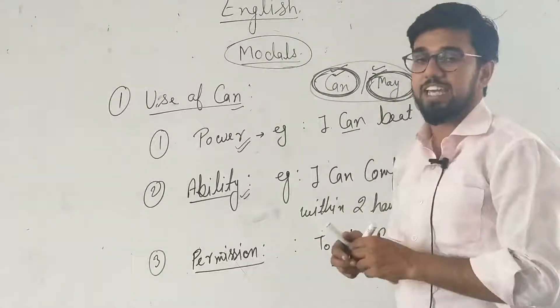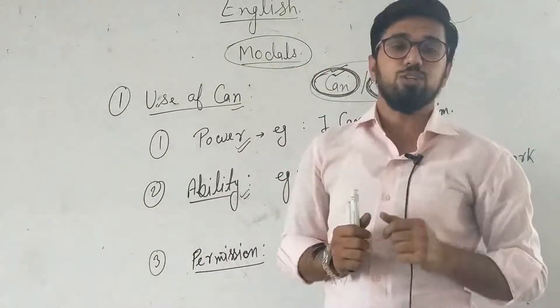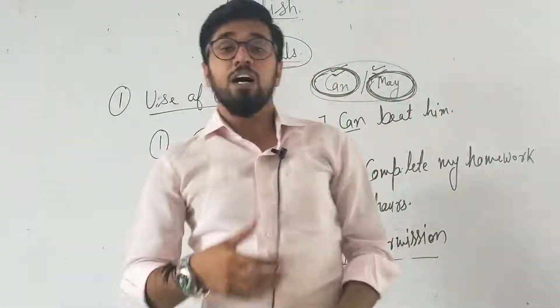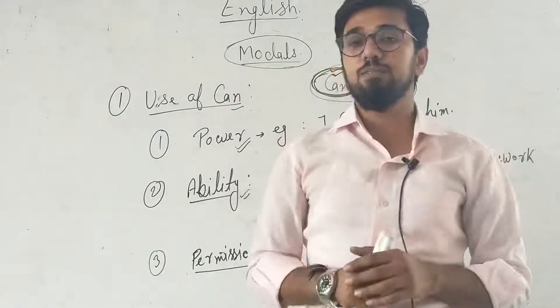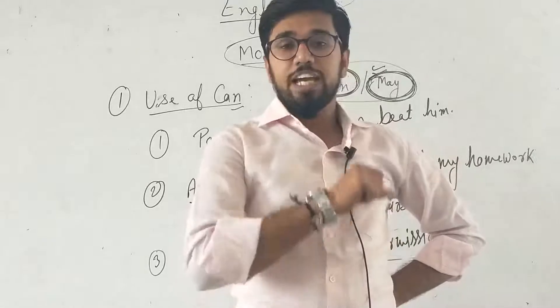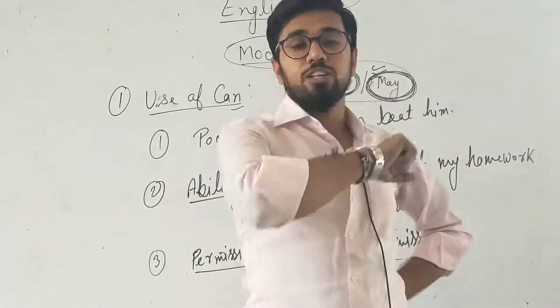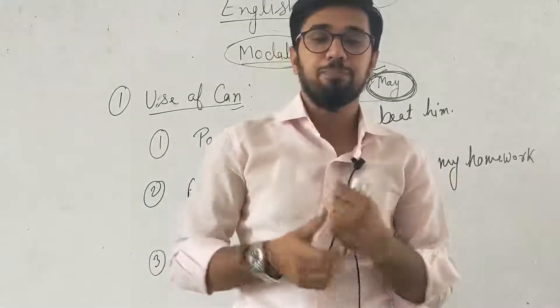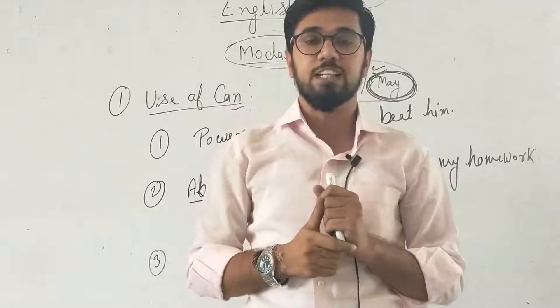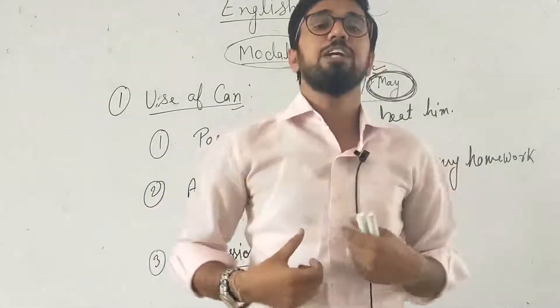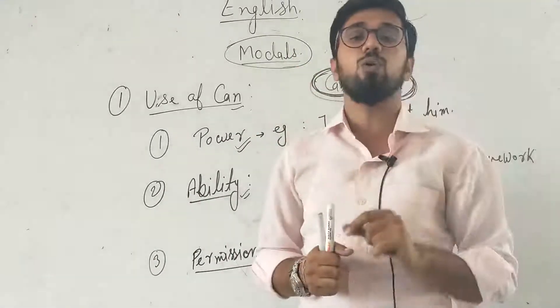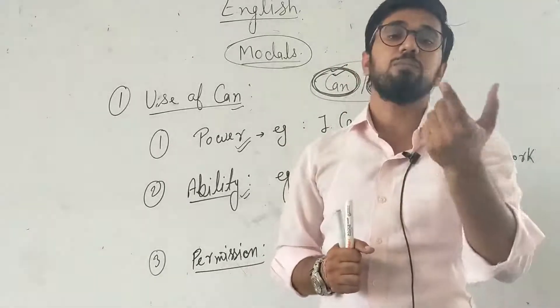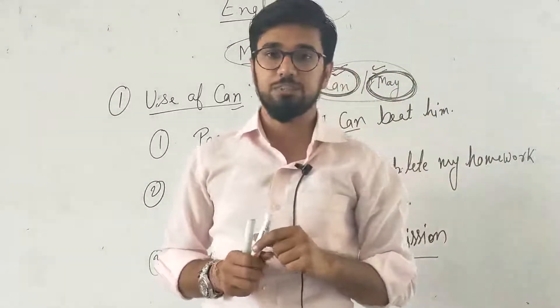And next point where do we use can? Can is used to show any possibility. How? Listen carefully, can is used to show possibility. For an example, he can be a doctor. If I see someone wearing a white apron on the road.